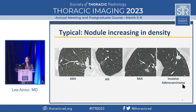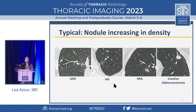This is the spectrum of primary lung adenocarcinoma. Not only will nodules increase in size, but lung cancers on the adenocarcinoma spectrum will increase in density. Atypical adenomatous hyperplasias can only be up to 5 millimeters — tiny and only ground glass. Then AIS can be larger but is still pure ground glass. Minimally invasive adenocarcinomas can have solid components, but not larger than 5 millimeters. Invasive adenocarcinomas — we're worried about those when the solid component is 5 millimeters or greater.